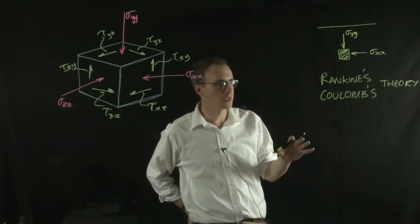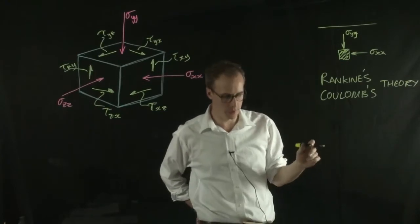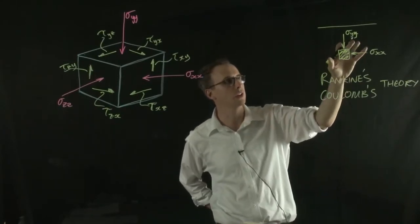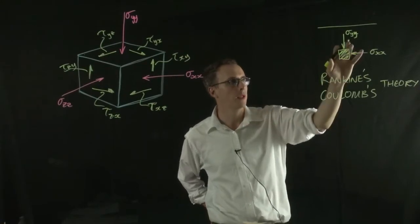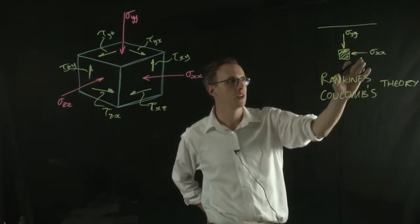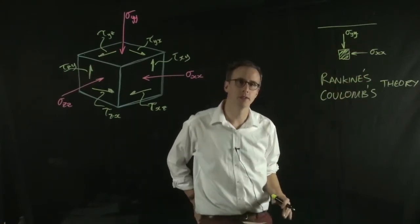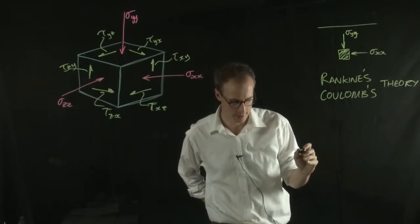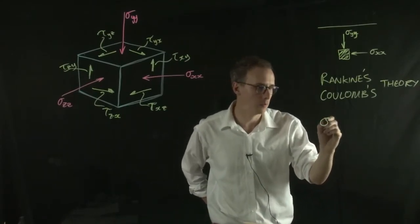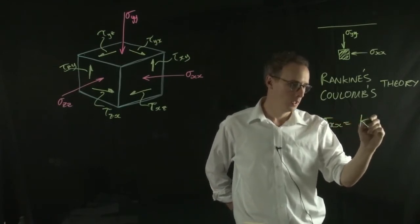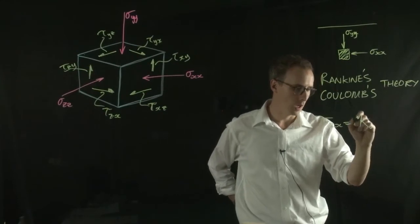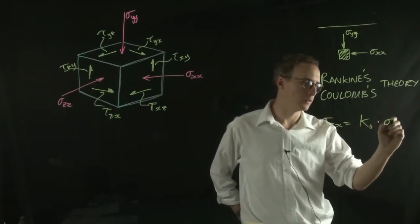I'm not going to go through those in too much detail, but really what they're doing is taking a proportion of the vertical stress, multiplying it by a constant, and that gives you your horizontal stress. In most of these theories, the horizontal stress is equal to a constant multiplied by the vertical stress.